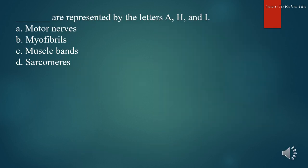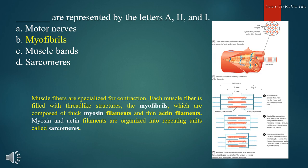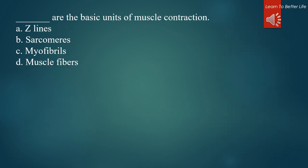Question 1. What are represented by the letters A, H, and I? A. Motor nerves. B. Myofibrils. C. Muscle bands. D. Sarcomeres. The answer is B. Myofibrils. Muscle fibers are specialized for contraction. Each muscle fiber is filled with thread-like structures, the myofibrils, which are composed of thick myosin filaments and thin actin filaments. Myosin and actin filaments are organized into repeating units called sarcomeres, which are the basic units of muscle contraction.